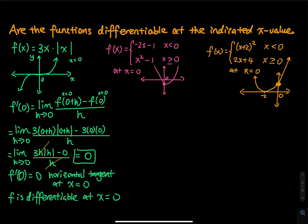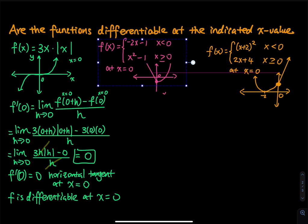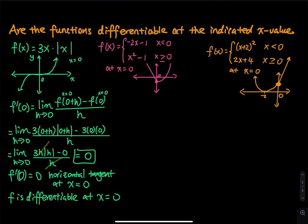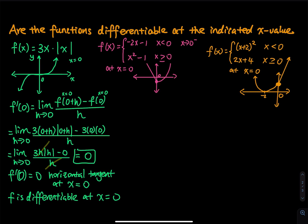The next one is a piecewise function. For a piecewise function, we will have to look at the left limit and the right limit. We have a linear function when x is less than 0, and a parabola when x is greater than or equal to 0. x less than 0 means when we set up the limit, x goes to 0 from the left; x greater than or equal to 0 means x goes to 0 from the right. We have to do two limits: the left limit for the linear function, and the right limit for the parabola.